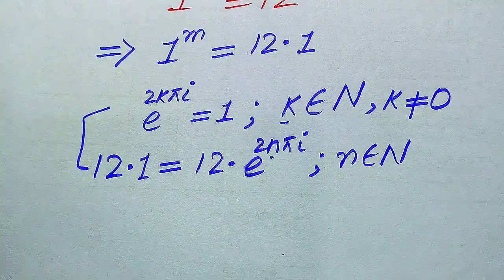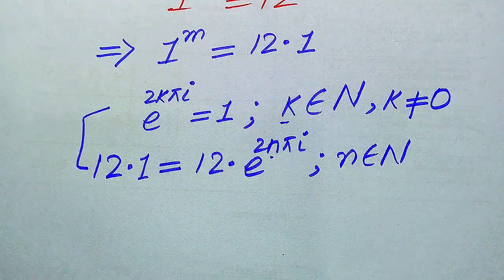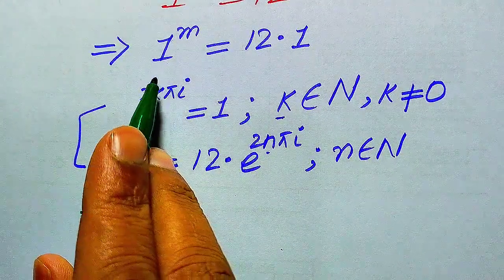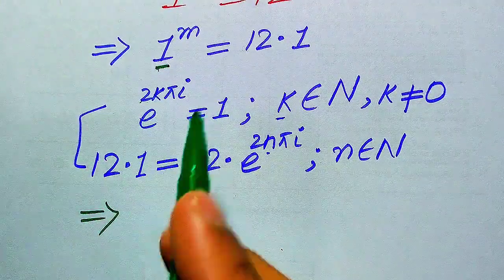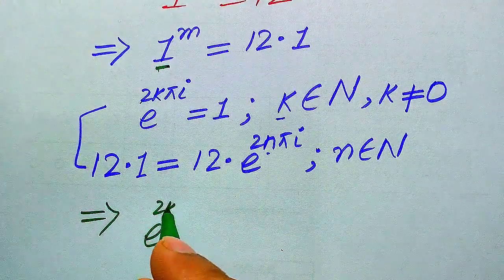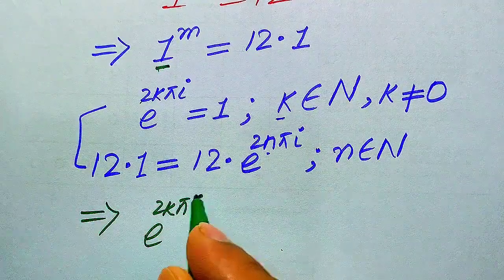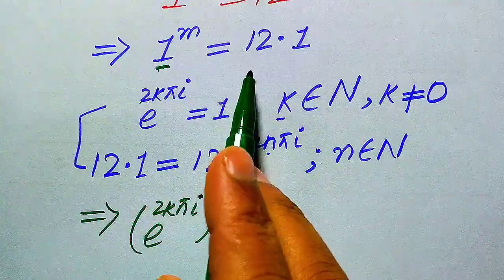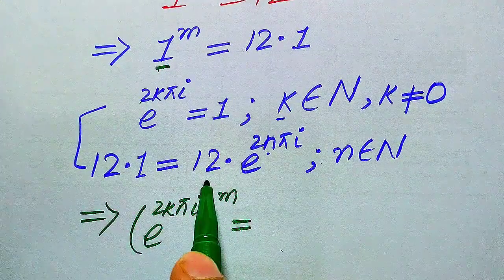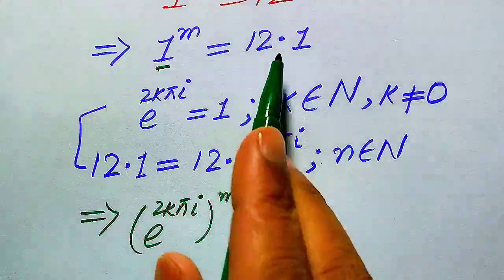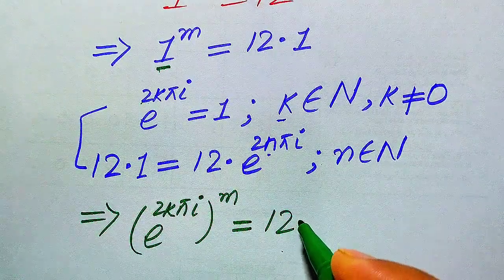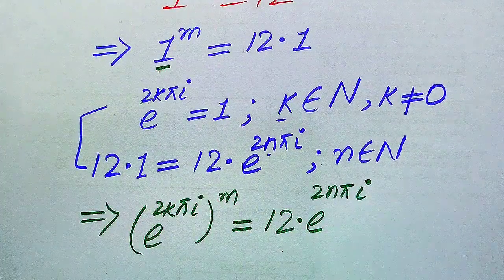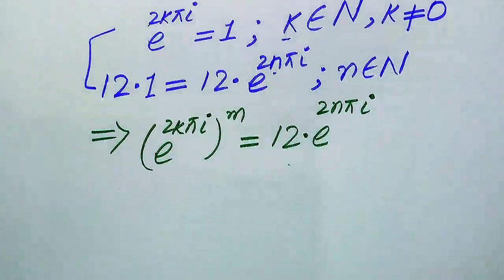We substitute both of these values into the above equation. After substituting, the left-hand side 1 to the power of m becomes e to the power of 2k·π·i, and its whole power is m. This equals 12 times of 1, which becomes 12 times e to the power of 2n·π·i.